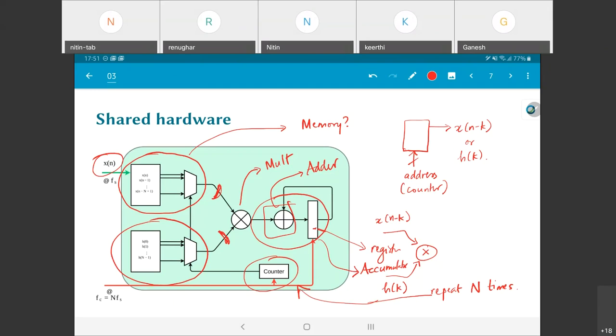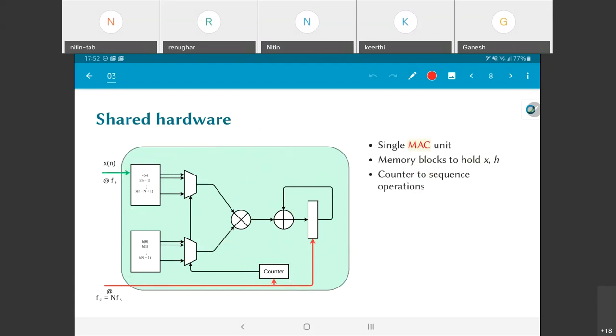So in other words, what I have managed to do by this architecture is to say that I have a single multiply accumulate unit, a MAC unit, there are memory blocks which hold the values of x and h, and a counter which will sequence across all the operations.